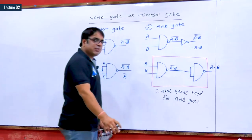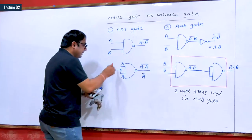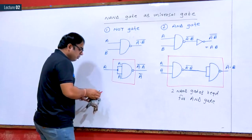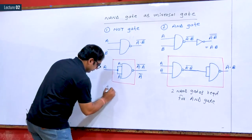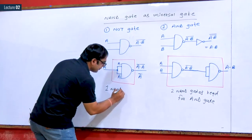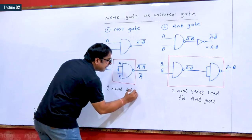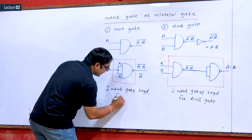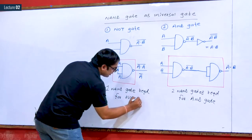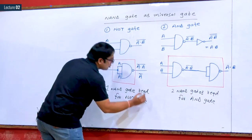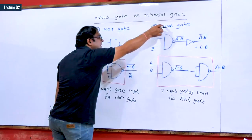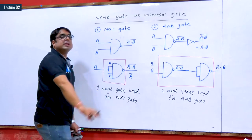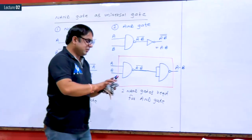So this complete structure is your AND gate. We can conclude: two NAND gates are required for AND gate, and one NAND gate is required for NOT gate. Two of the three basic gates are done; now the third one is the OR gate.